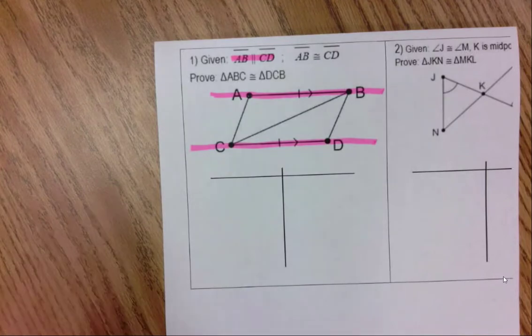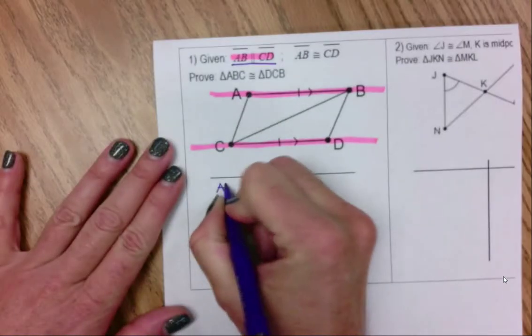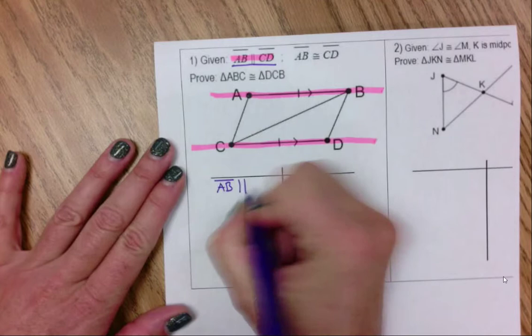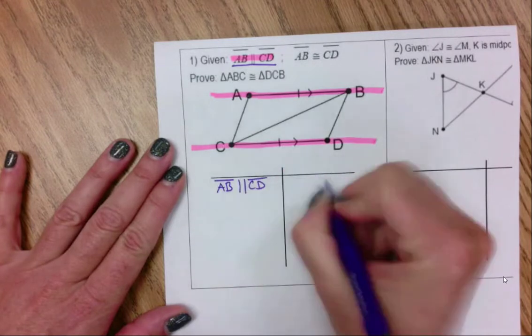So I'm going to go ahead and write my given. AB is parallel to CD. This is given.